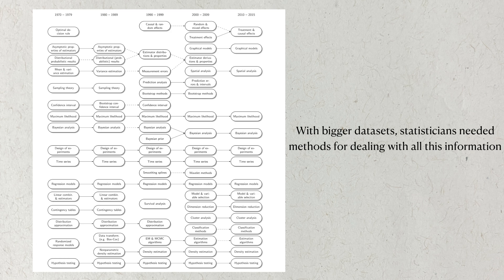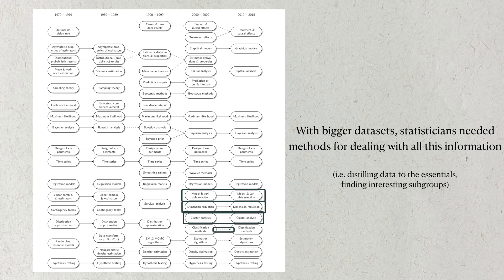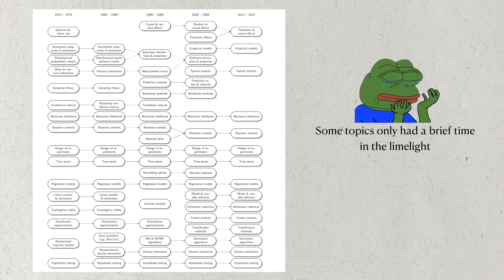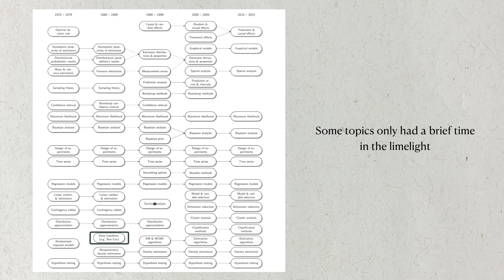In the 2000s, we see the rise of topics like variable selection and dimension reduction. Much like this paper, we start seeing clustering and classification papers. I always assumed that clustering and classification were popular topics back then, but this analysis tells me they only became popular in recent times. Finally, we can use this graph to see how topics change — topics like data transformations and survival analysis only have one time in the spotlight. This was a little surprising to me because I feel like I get exposed to survival analysis a lot more, since it's a major biostatistics topic.